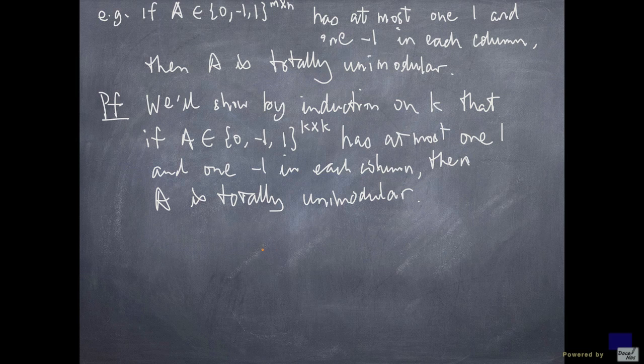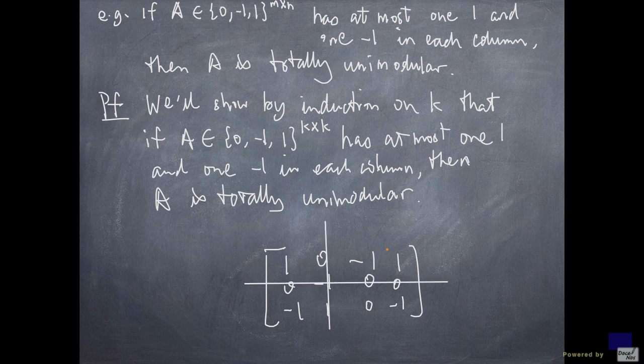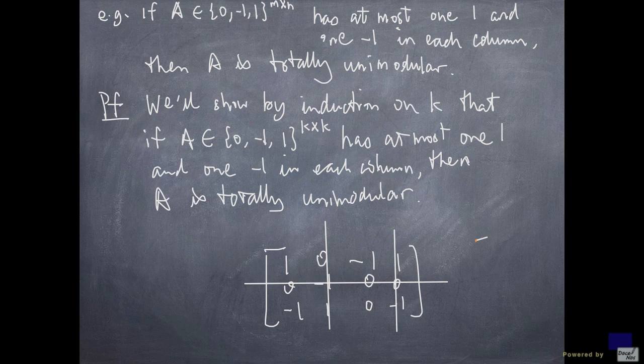Now before I prove this, I want to say what it means by a square submatrix. So, say you have a matrix that looks like this. So it has 3 rows and 4 columns. Now, to get a 2 by 2 submatrix, what you do is you delete one row and delete two columns. So I can choose to delete this row and these two columns. Then the 2 by 2 submatrix that we get is going to be 1, minus 1, minus 1, and 0. And you can check that the determinant of this thing is minus 1.